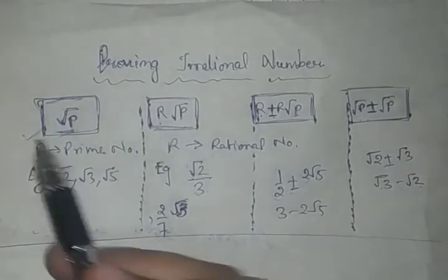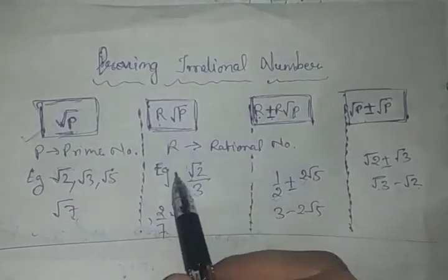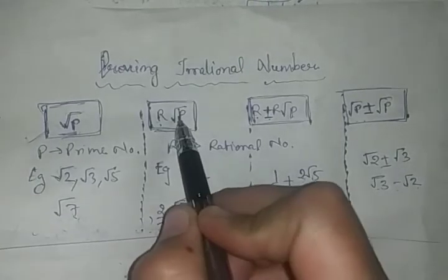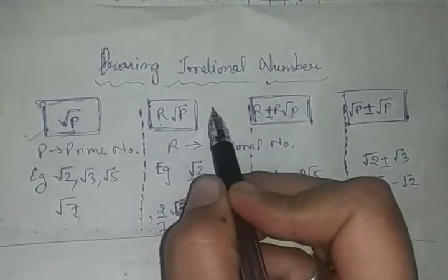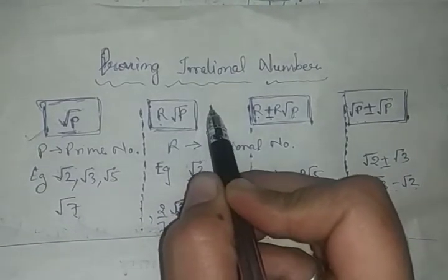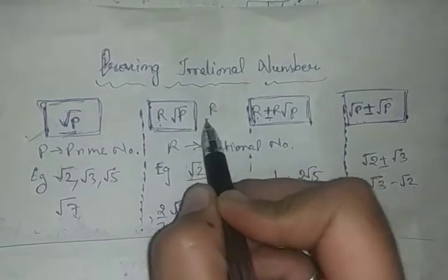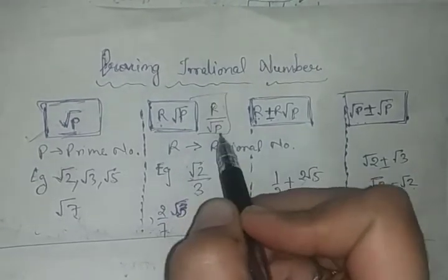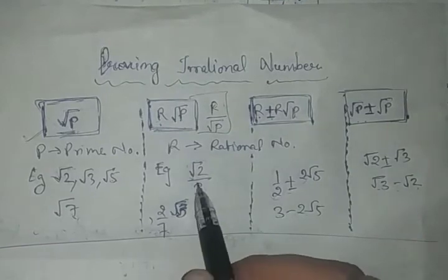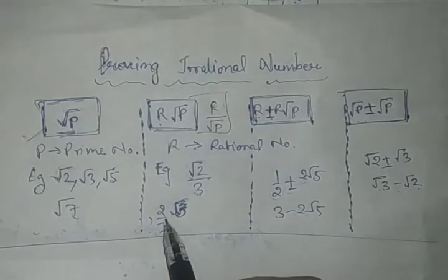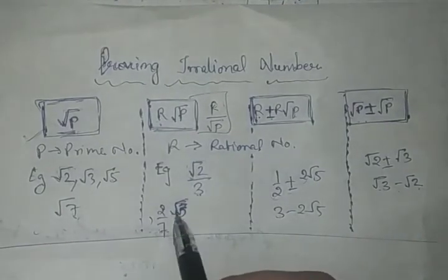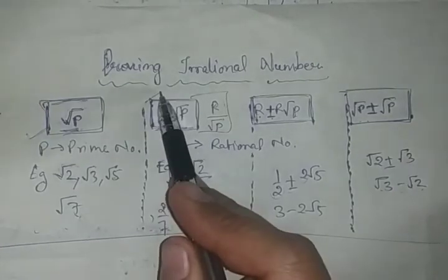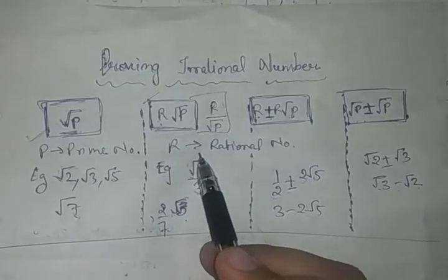Second type: अगर हमारे पास कोई भी rational number है और root prime हो — इस category में जैसे root 2 upon 3, या 2 upon 7 under root 3 इस तरह के questions आते हैं। यह second type हो गया और इसका अलग method है।